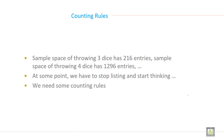This is from the previous slide. Now, counting rules. The sample space of throwing 3 dice has 216 entries, and the sample space of throwing 4 dice has 1296 entries. At some point we have to stop listing and start thinking — we need some counting rules.